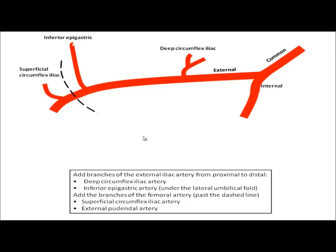And it gives off two little branches in that area, the superficial circumflex iliac and the external pudendal artery. You probably didn't see those when you dissected the lower limb, but they are small, but there.